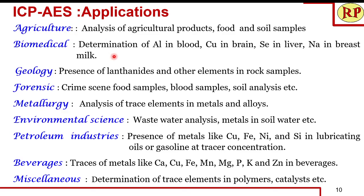Wherever trace elements are present, ICP-AES is the method of choice, because the plasma temperature is very high compared to the flame used in flame photometry. Even minute quantities can be identified — they undergo excitation and return to the ground state by emitting light of their own characteristic wavelength. That's all for this session; please subscribe and drop your comments if you haven't already.